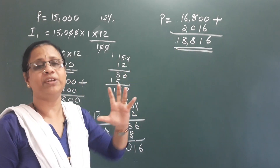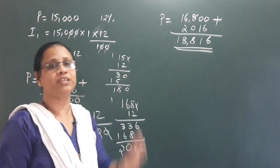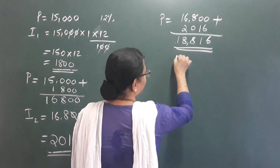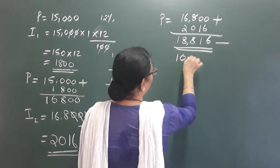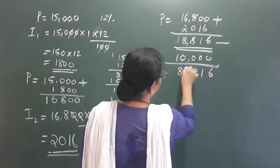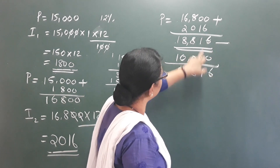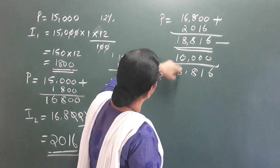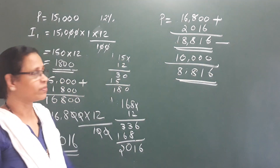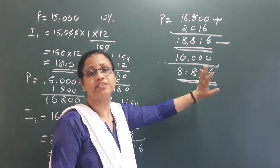After 2 years the amount is 18,816 rupees. Thomas paid back 10,000 rupees. So 18,816 minus 10,000 equals 8,816 rupees remaining. This 8,816 rupees becomes the principal for the third year at 12% interest.